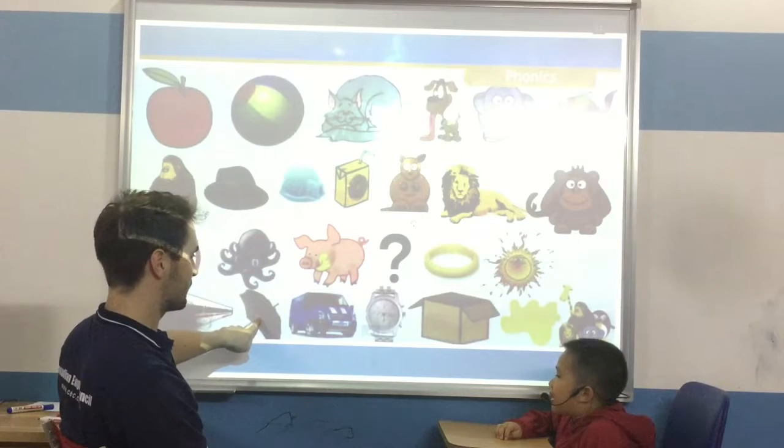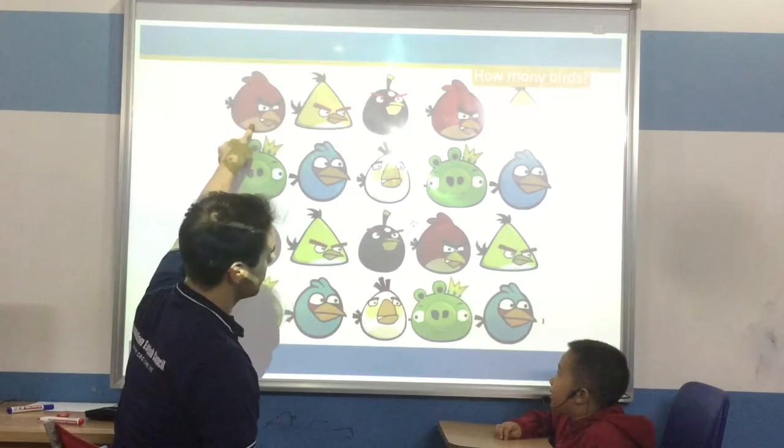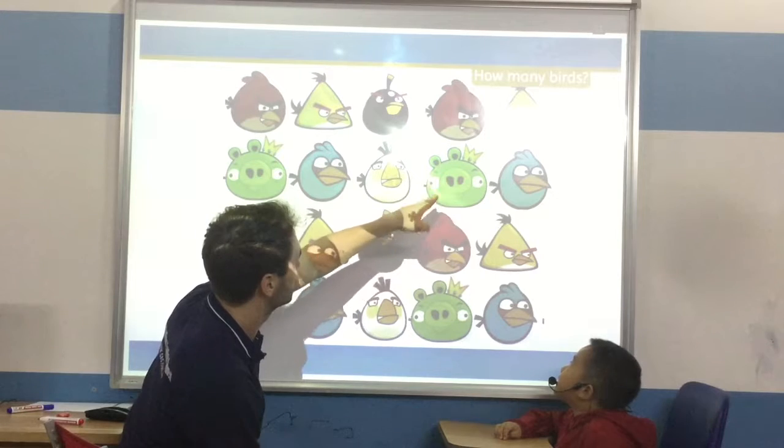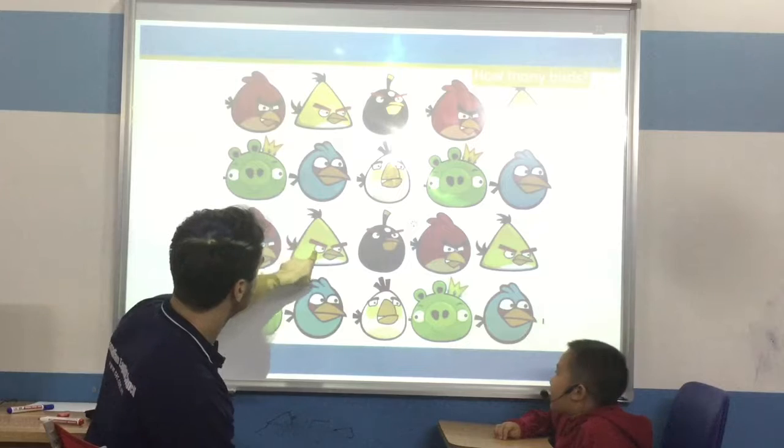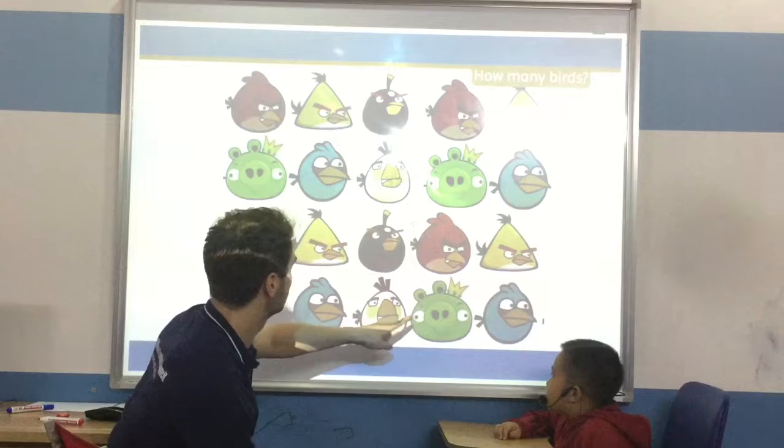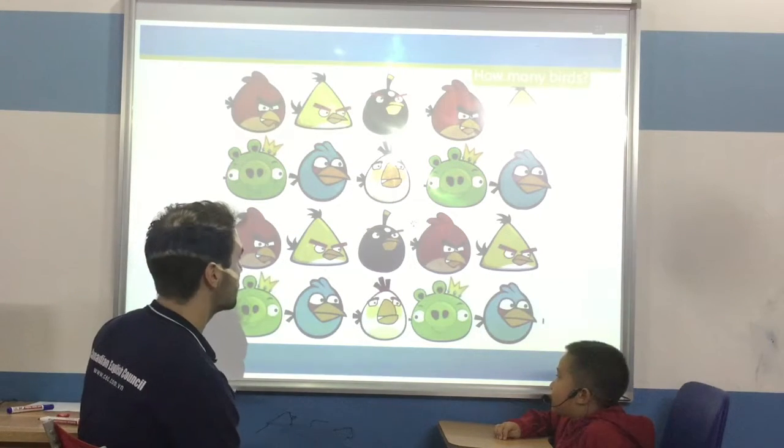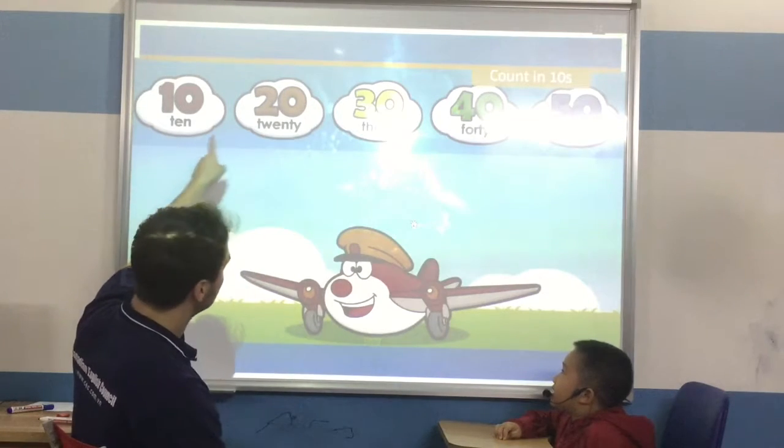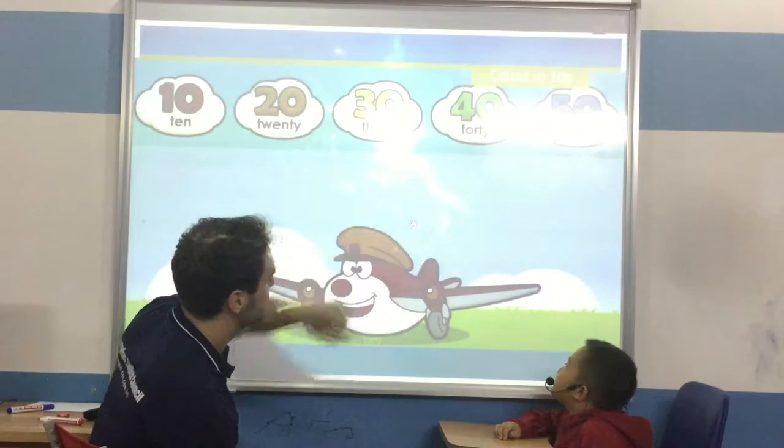This one. I know. Umbrella. Good, hold on. Okay, can you count? 1, 2, 3, 4, 5, 6, 7, 8, 9, 10, 11, 12, 13, 14, 15, 16, 17, 18, 19, 20. How many birds? Twenty. Ten, twenty, thirty, forty, fifty.